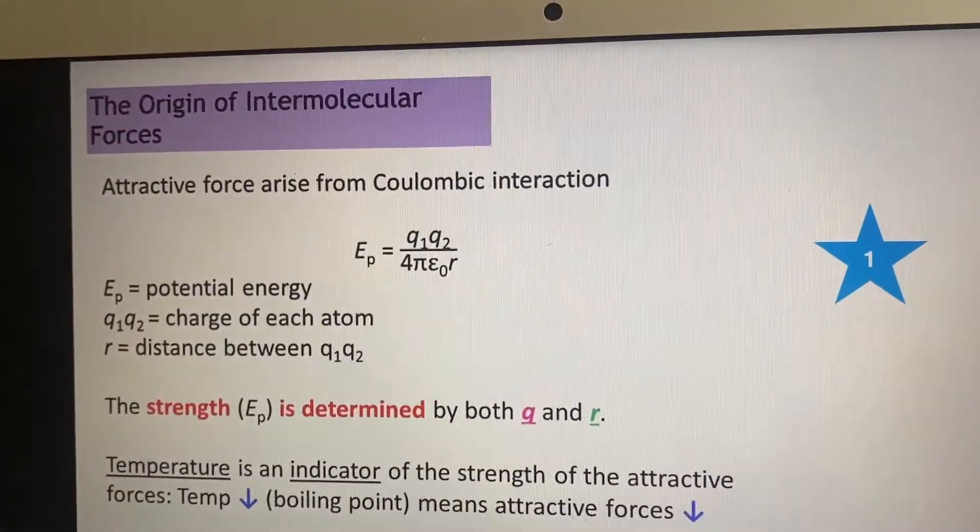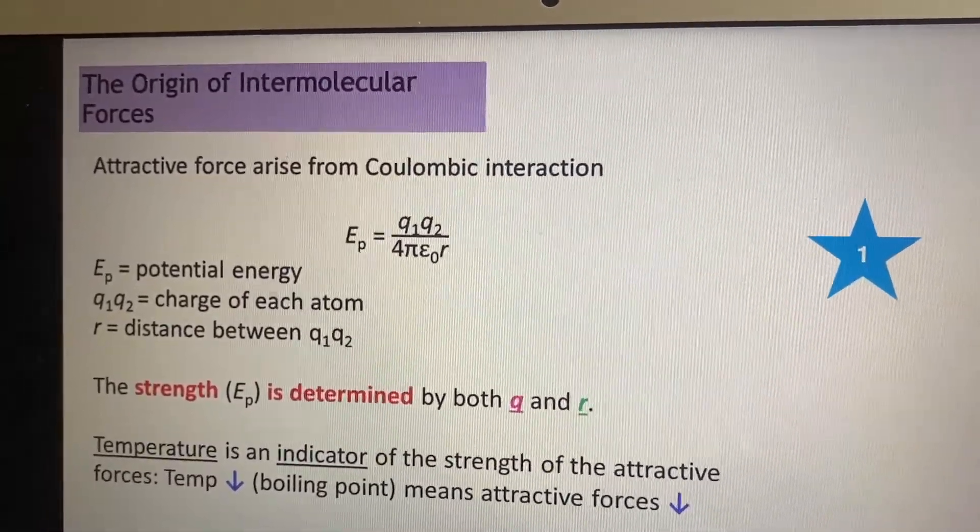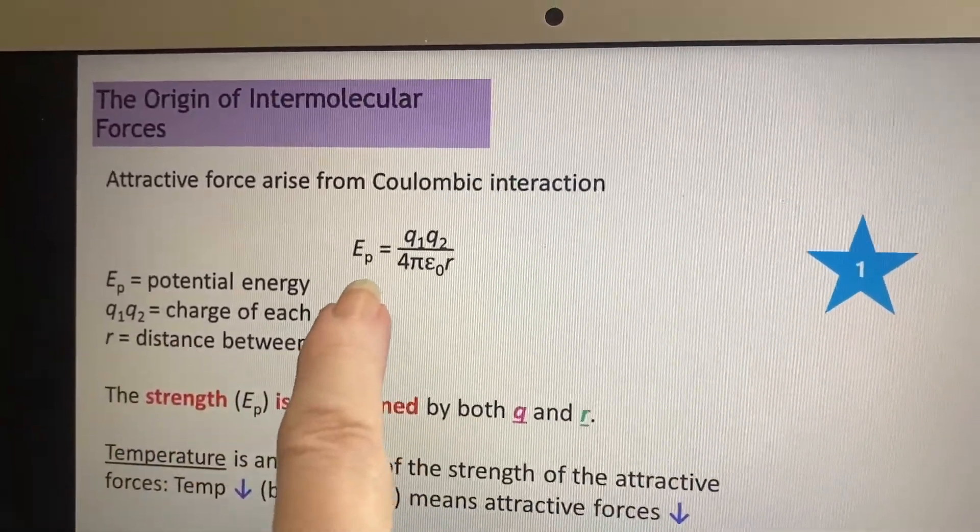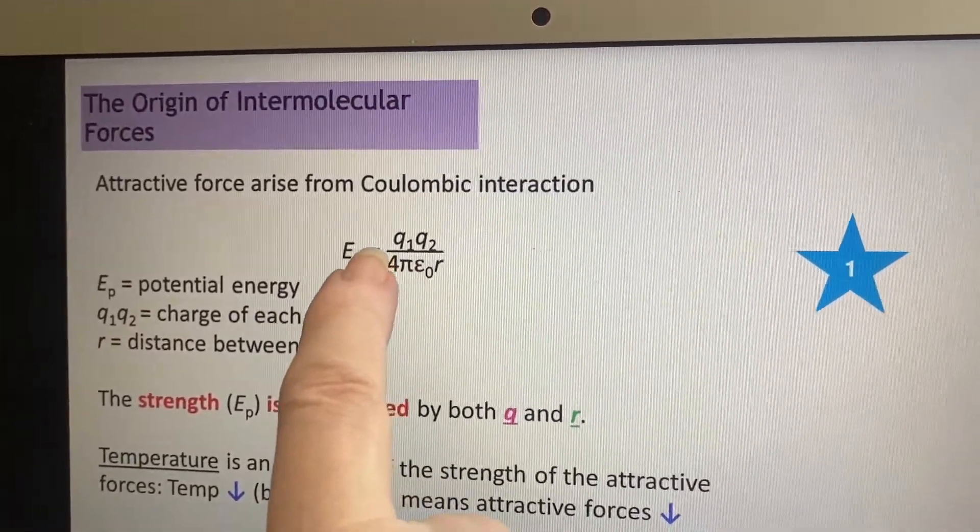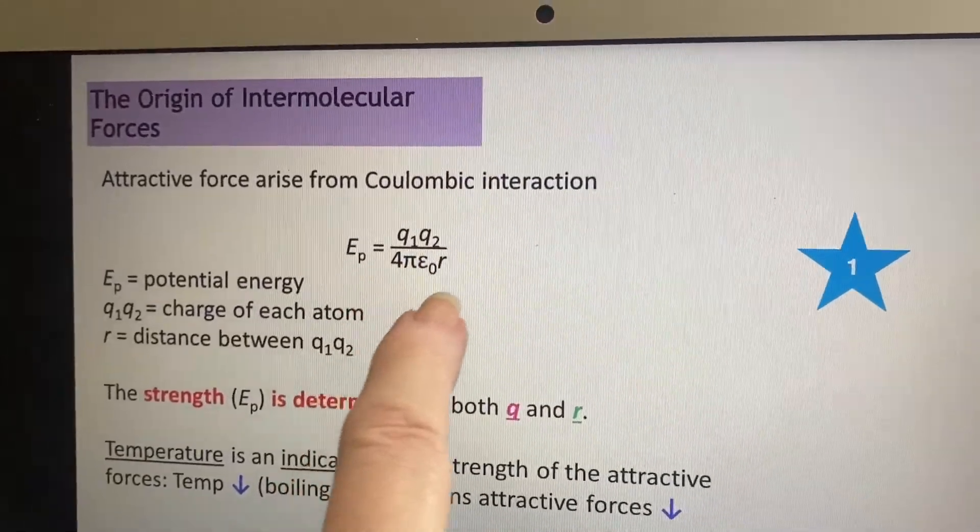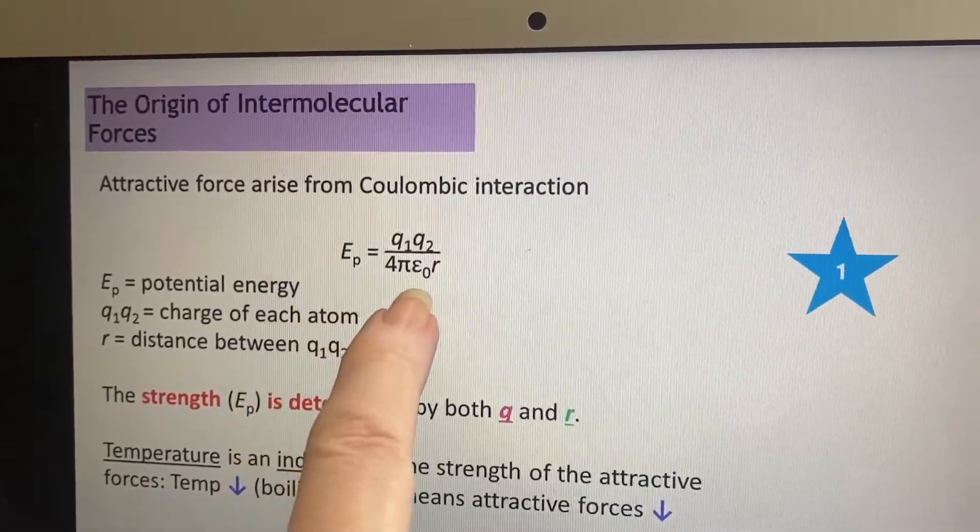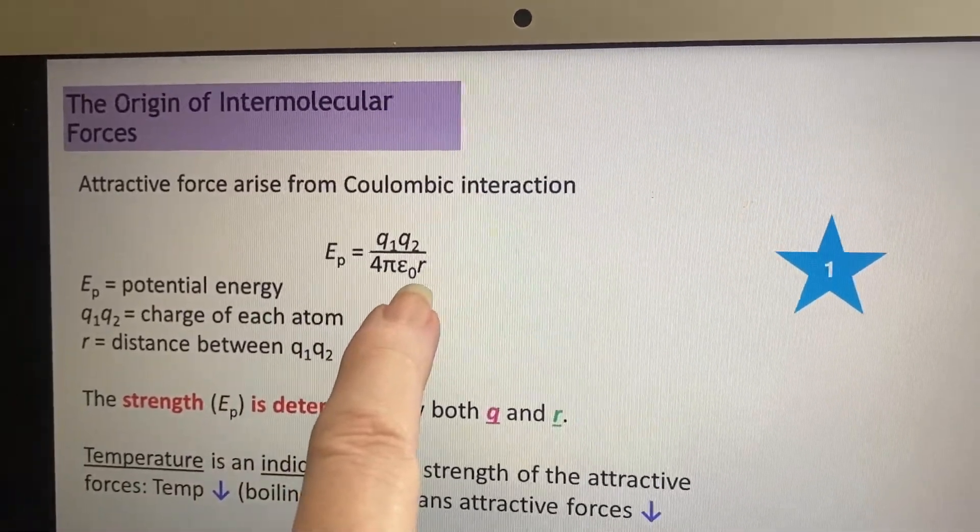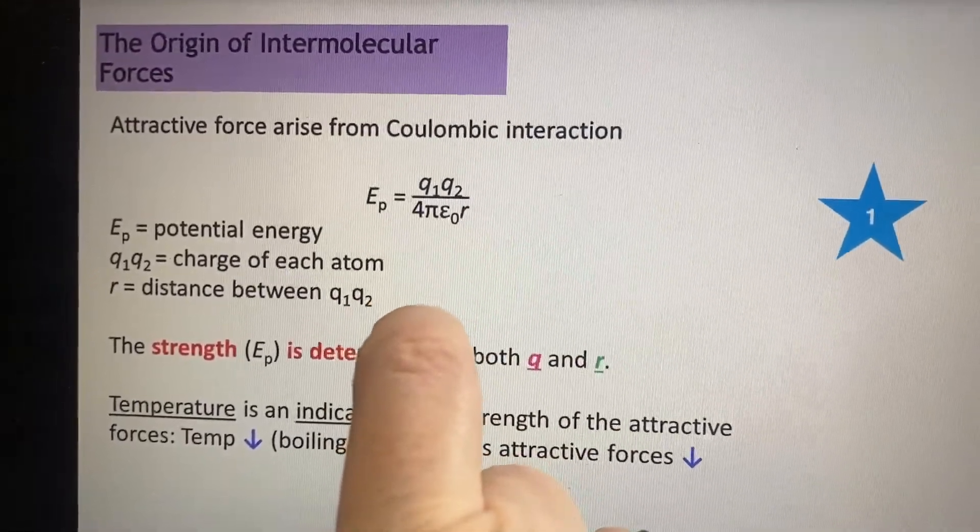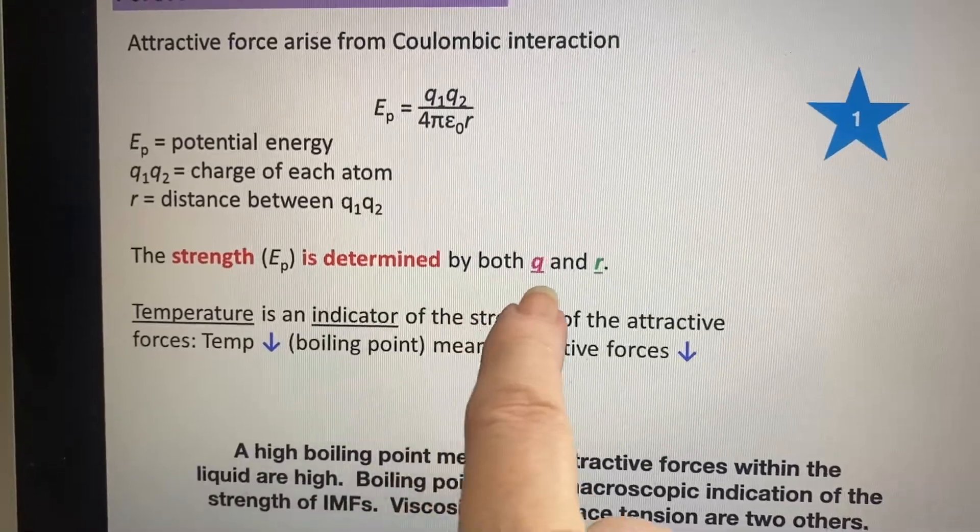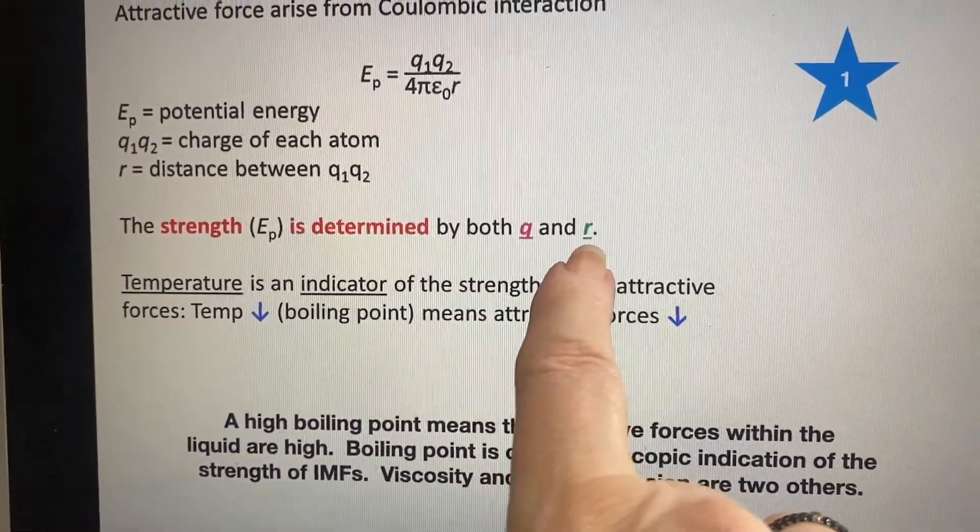So the first point is about intermolecular forces. Where do they come from? We're talking about a Coulomb interaction. This is energy that is due to the charges. So if we have things that are charged, we can see from this equation that we're going to come up with a certain amount of energy involved. And depending on whether it's positive or negative, it's either going to be trying to drive them apart or keep them together. This amount is going to be determined by both the charges and the distance between the charges.